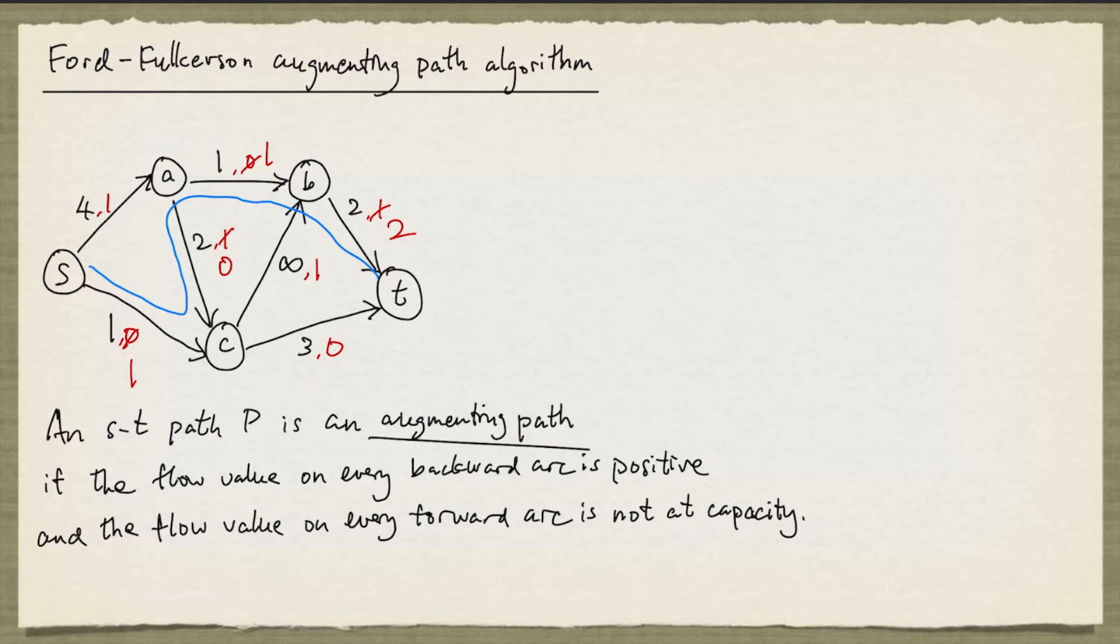There's a systematic way of finding augmenting paths. The way to do it is to form what is known as the auxiliary digraph. This digraph has the same node set. We are going to add an arc from u to v when either uv is an original arc and the flow value is less than capacity, or if vu is an original arc and the flow value is positive.